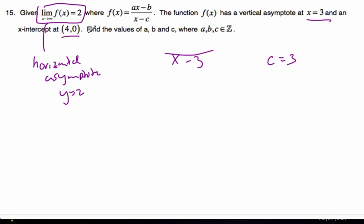Now I know the horizontal asymptote has to be 2, so that means the leading coefficient a has to be 2 as well, because these powers are the same—1 to 1, same powers. So the leading coefficients is the horizontal asymptote.